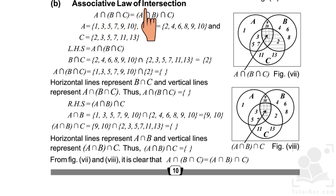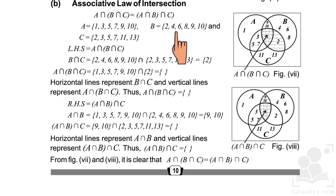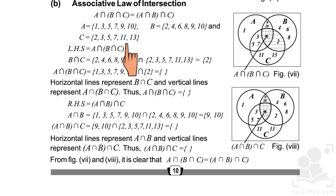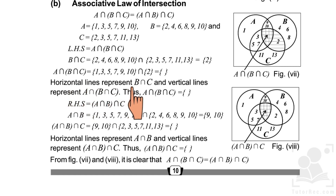Next is the associative law of intersection. For the left-hand side: set A has elements 1, 3, 5, 7, 9, 10; set B has elements 2, 4, 6, 8, 9, 10; and set C has elements 2, 3, 5, 7, 11, 13. We first find B intersection C — the common element is 2 — represented with horizontal lines.